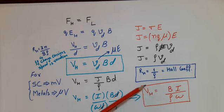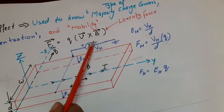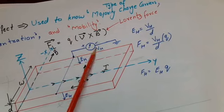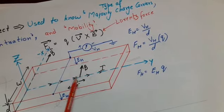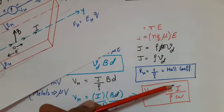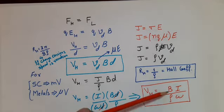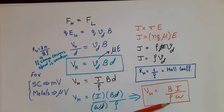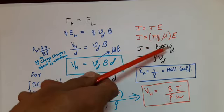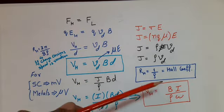By observing the VH value on the voltmeter, we can determine whether the semiconductor is P-type (VH positive) or N-type (VH negative). Since we know the applied magnetic field B, the current I (measured by an ammeter in series), and the width W of the semiconductor, we can calculate ρ — the volume charge density — and from that find N (electron concentration) for N-type (ρ = N·Q) or P (hole concentration) for P-type (ρ = P·Q). So we can find the majority charge concentration using the Hall effect.